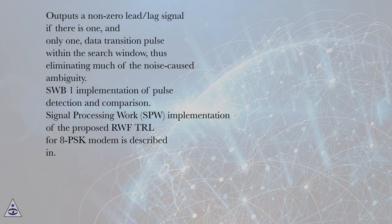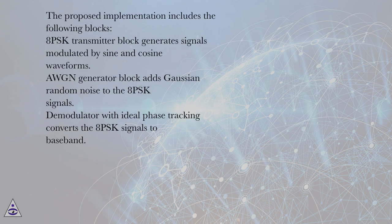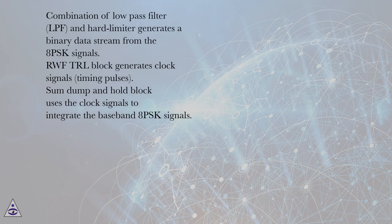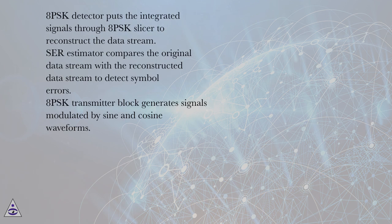SWB1 Implementation of Pulse Detection and Comparison Signal Processing. Implementation of the proposed RWF TRL for 8PSK Modem includes the following blocks: 8PSK Transmitter Block generates signals modulated by sine and cosine waveforms; AWGN Generator Block adds Gaussian random noise to the 8PSK signals; Demodulator with ideal phase tracking converts the 8PSK signals to baseband; combination of Low-Pass Filter (LPF) and Hard Limiter generates a binary data stream; RWF TRL Block generates clock signals (timing pulses); Dump and Hold Block uses clock signals to integrate the baseband 8PSK signals; 8PSK Detector puts the integrated signals through an 8PSK slicer to reconstruct the data stream; SARE Estimator compares the original data stream with the reconstructed data stream to detect symbol errors.